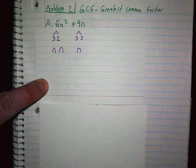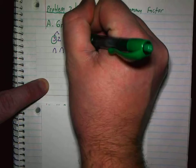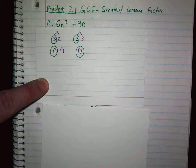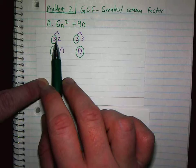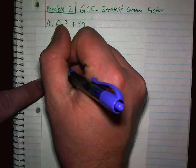And I'm looking, what do they have in common here? They both have 1 3 and 1 N, right? Can I circle another 3? No. So what they have in common, the greatest thing they have in common is a 3N. Take the 3N out.